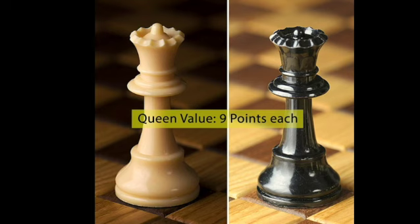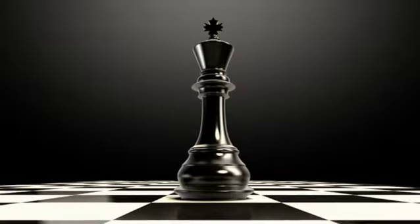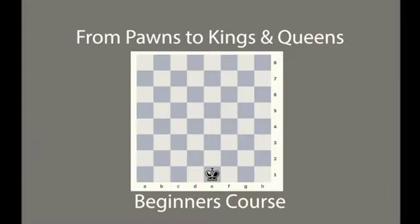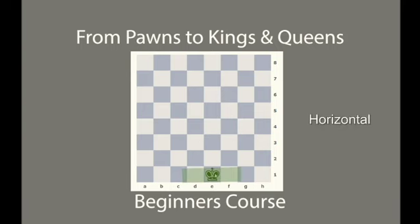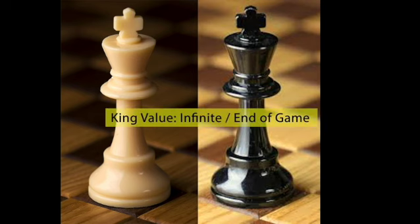The most powerful piece on the chess board — what's the most important piece? The king. The king moves vertical, horizontal, as well as diagonal, one square at a time. We don't put a value to the king, because once he's captured, that's the end of the game.